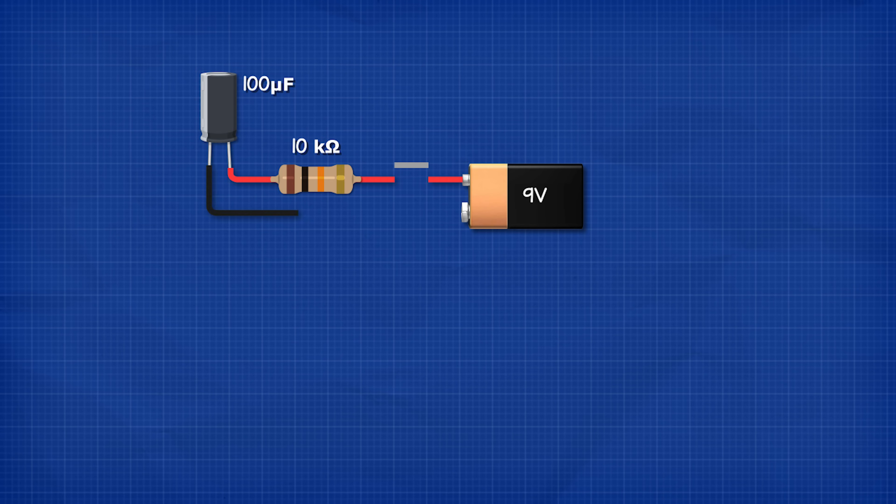Let's say we have a 9 volt battery, a 100 micro farad capacitor, a 10 kilo ohm resistor and a switch which are all in series. The capacitor is fully discharged and we read 0 volts across the two leads.